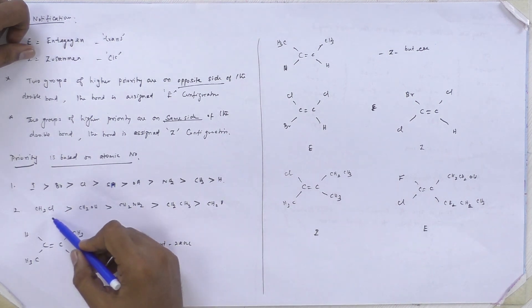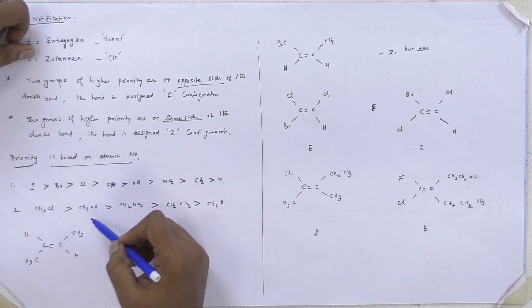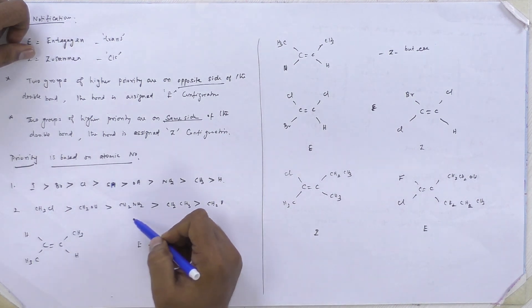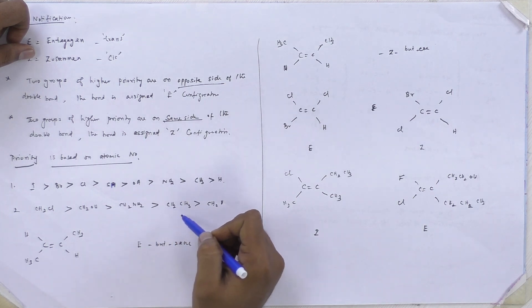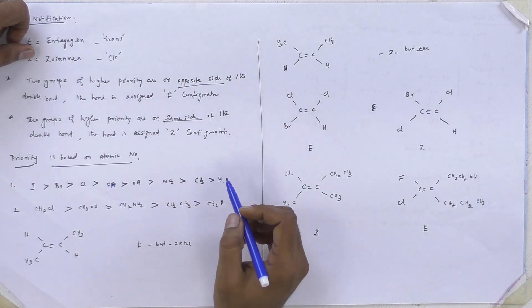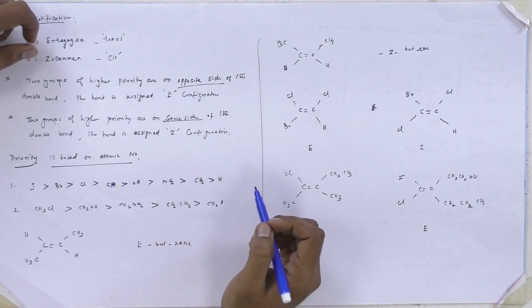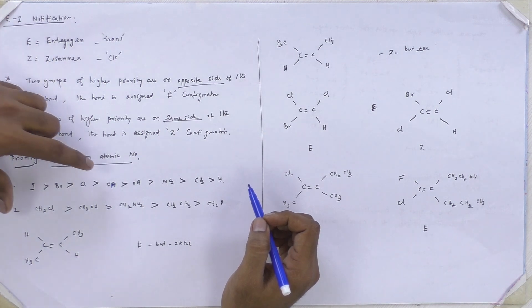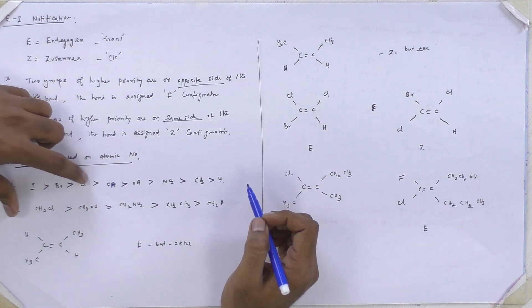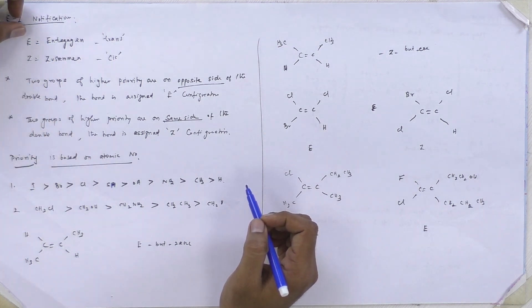Next, CH2Cl, similarly CH2Cl, CH2OH, CH2NH2, CH2CH3, CH2H. So this is the order of priority we can give for double bonded compounds.